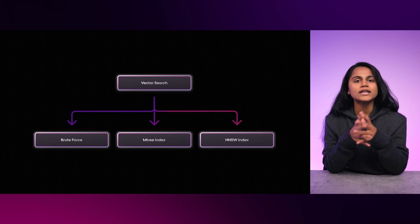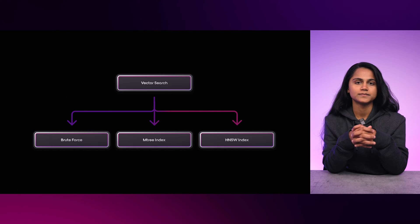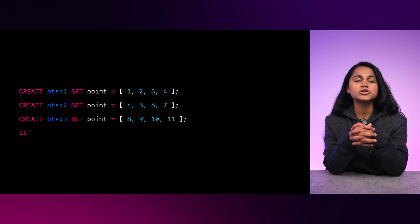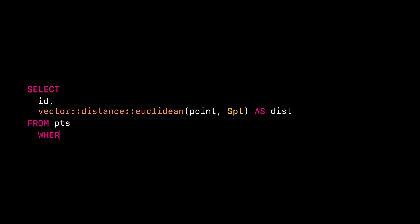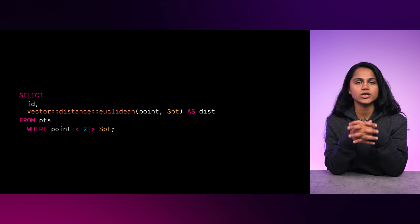Vector search in SurrealDB can be implemented in different ways based on the use case, data, and expectations from that search operation. The brute force method involves computing the distance from the query point to every other point in the dataset. For a small dataset with three vectors where you need to find the two nearest to a query vector, the KNN operator from SurrealQL would be helpful. It performs a k-nearest neighbors — that is, a KNN search — to find a specified number of records closest to a given data point.